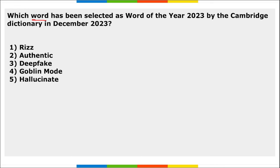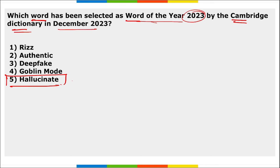Which word has been selected as the Word of the Year 2023 by the Cambridge Dictionary in December 2023? It is 'hallucinate.' Cambridge Dictionary decided the word of the year to be 'hallucinate,' whereas 'rizz' was selected as the word of the year by Oxford University Press.